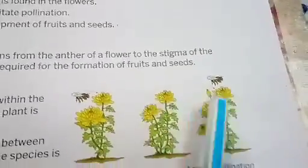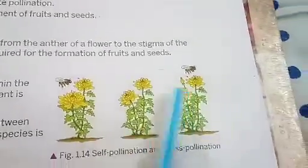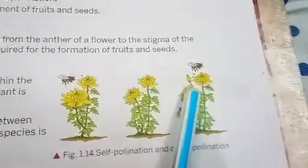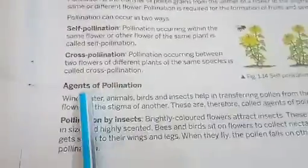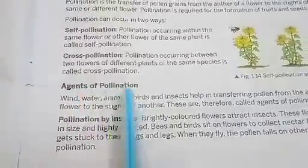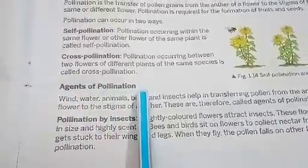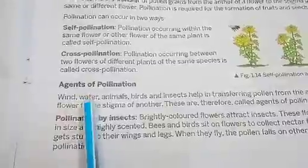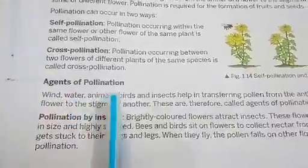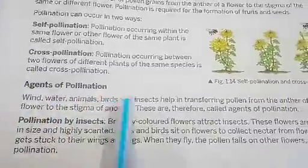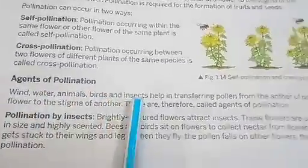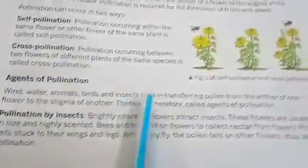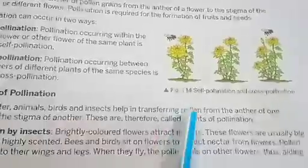For cross-pollination to occur, some agents are required — that is the next topic: agents of pollination. The agents are wind, water, animals, birds, and insects. They help in the transferring of pollen grains.